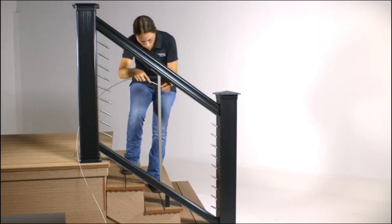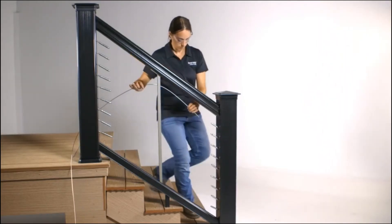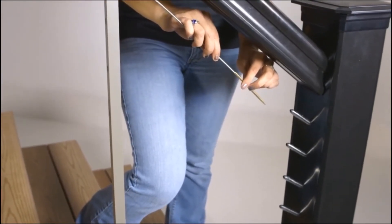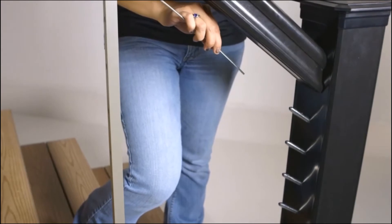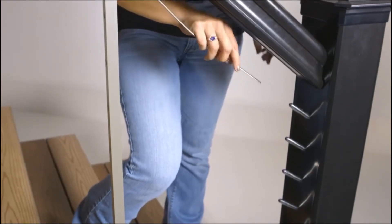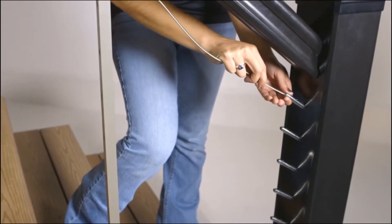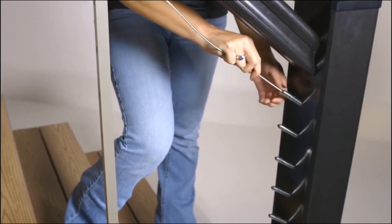Thread the cable through the intermediate picket. When you get to the bottom termination post, be sure to remove the lacing needle. Insert the cable all the way into the Quick Connect lag fitting until it stops. The jaws will automatically lock on the cable.